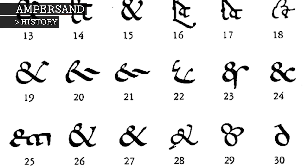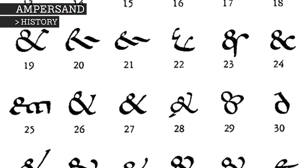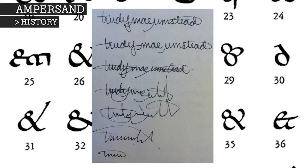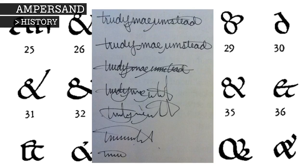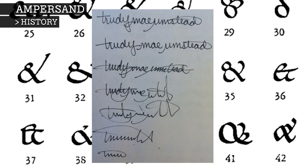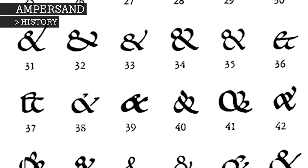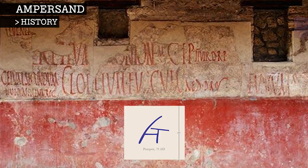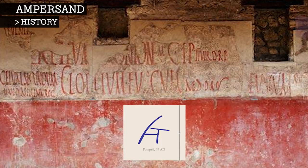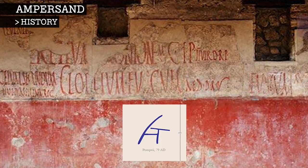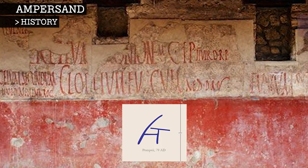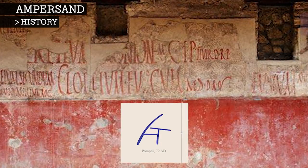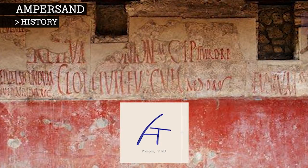Being such a common word to write, the Romans would write it quickly and, much like a signature, the more you write the same word, the faster you write it and the less legible it becomes. So soon "et" morphed into the character we know today. The earliest known recorded version of the ampersand was scrawled on a wall in Pompeii by an unknown graffiti artist and preserved under volcanic ash from the eruption of Mount Vesuvius in AD 79.